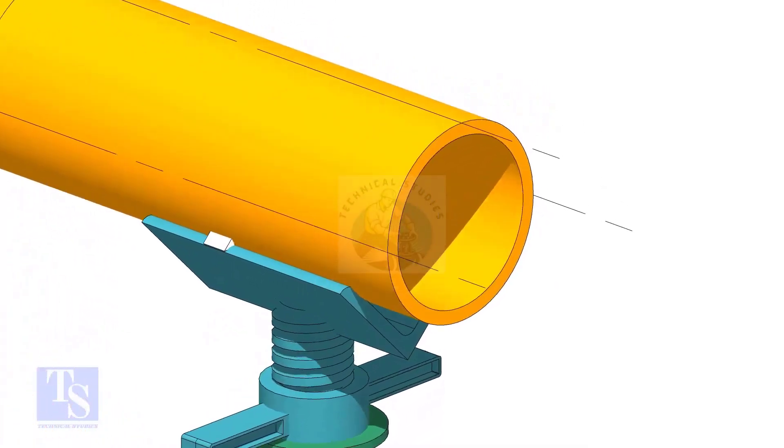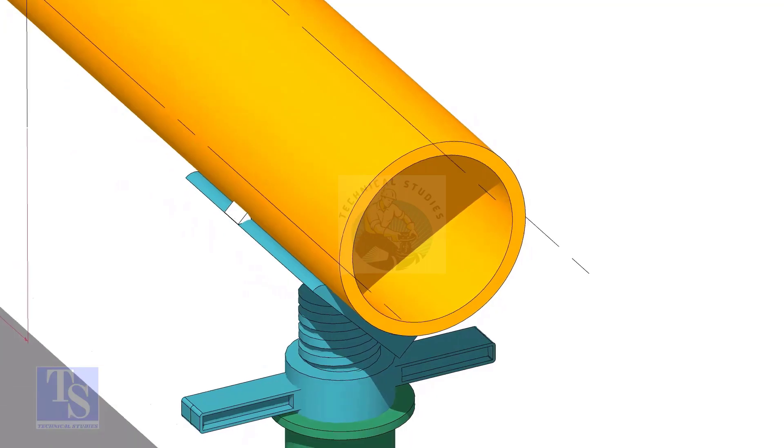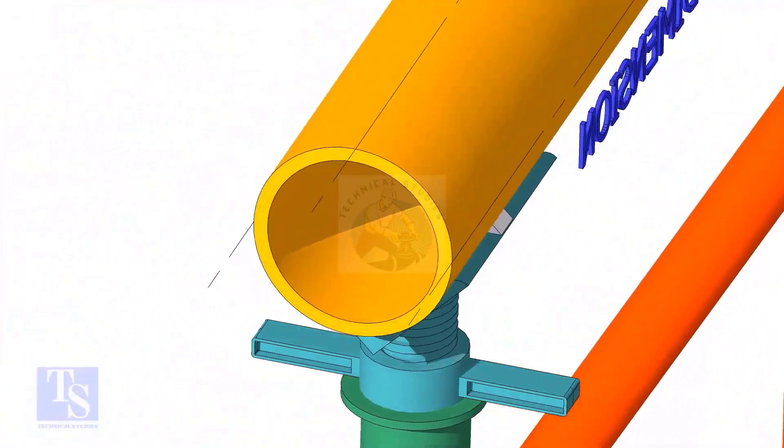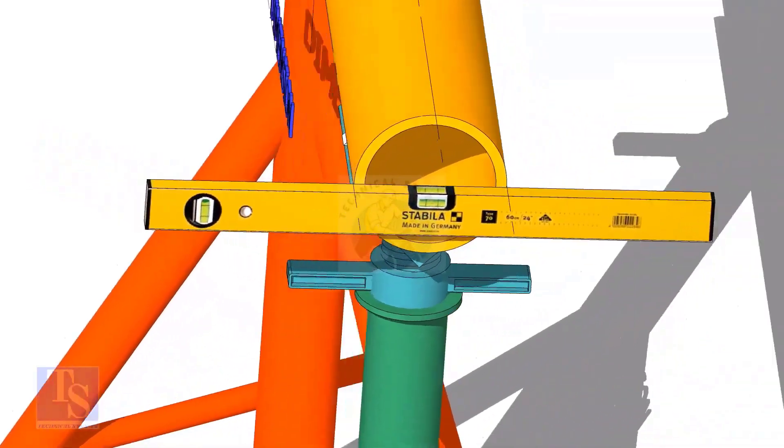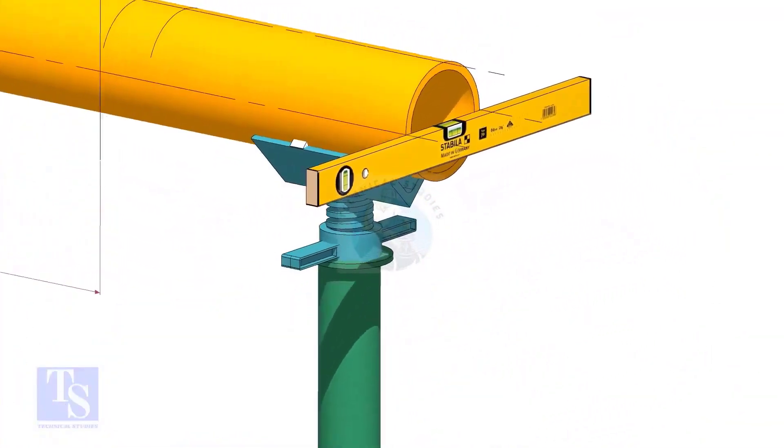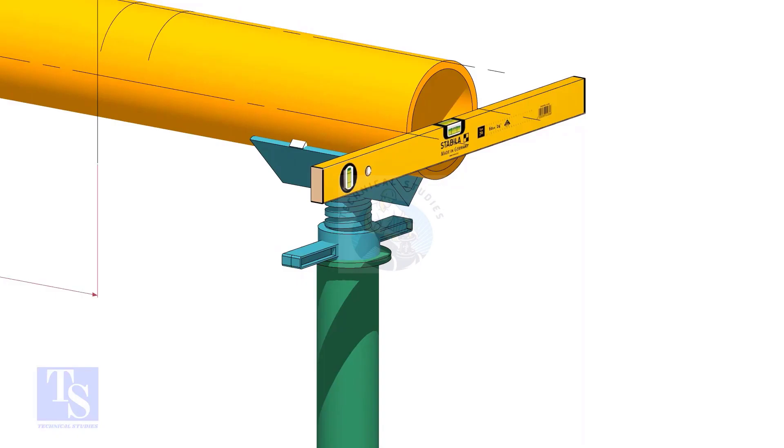After leveling the pipe, mark the center line and two quarter lines. Arrest the pipe, if required make small tack welds.